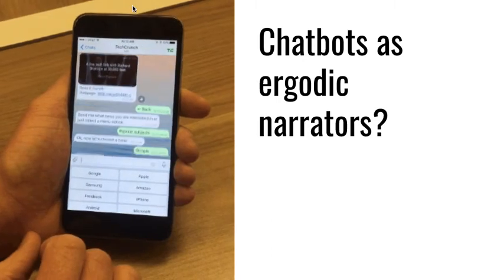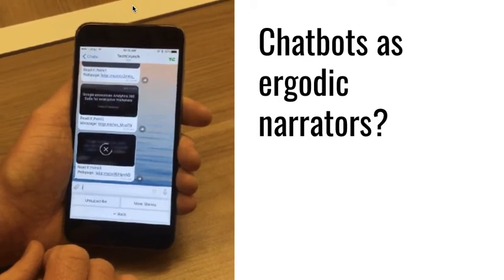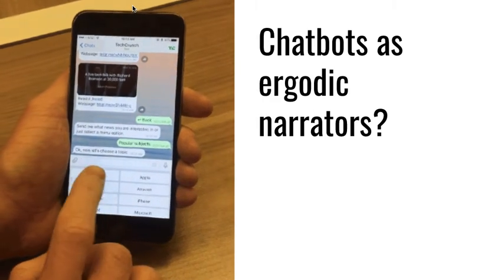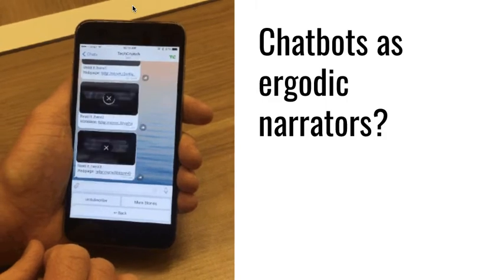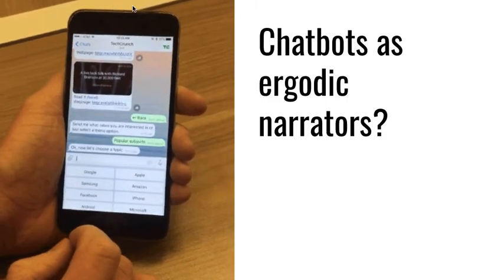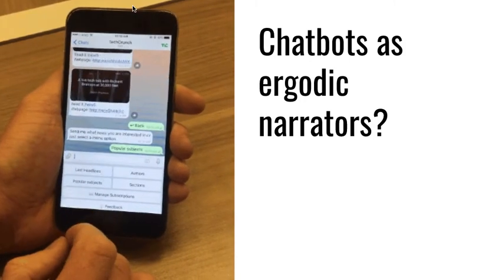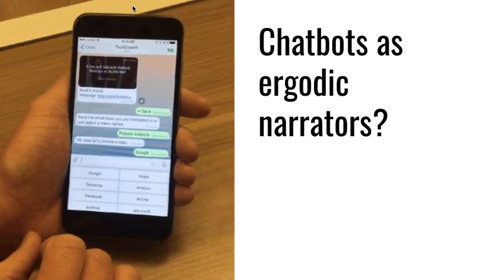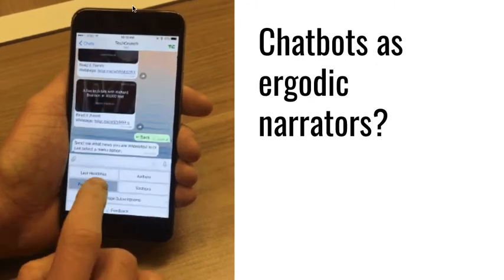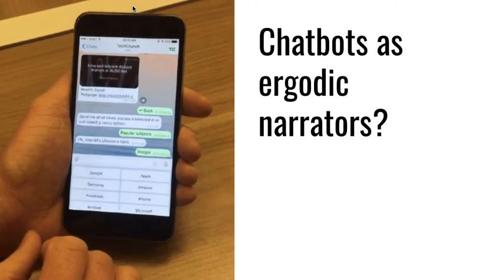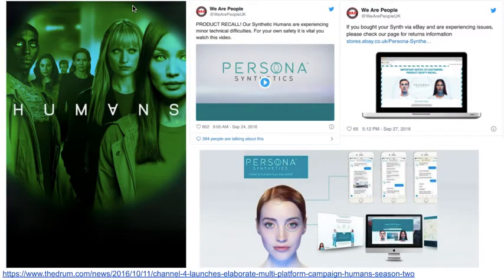Chatbots are also worth considering as a way of telling stories in an ergodic way. In a way, chatbots are an ergodic narrator — they will ask you questions, give you two or more options, and you will get a different path through the story based on those choices. Similar decisions apply about how much the paths diverge versus pushing the audience back into a central track. The drama series Humans used bots on its Facebook page as part of their interactivity alongside the broadcast story, and it's worth looking at their work at the link on this slide.